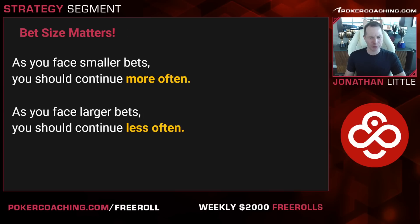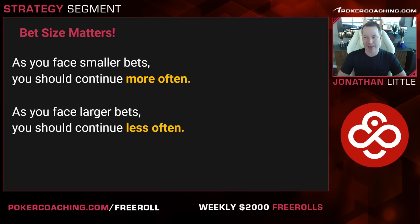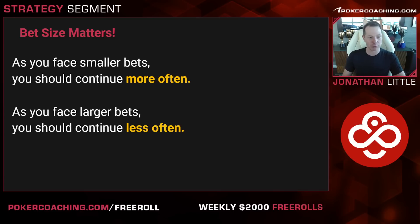Long story short: as you face smaller bets, you have to continue more often, and as you face larger bets, you have to continue less often. A lot of people think that if an opponent bets bigger they're trying to buy the pot, so they should call more often — but in general, when people bet bigger and bigger, you should be folding more and more, because you're getting worse and worse pot odds.